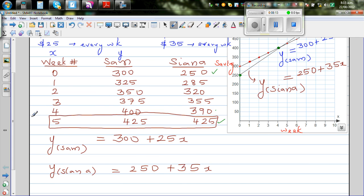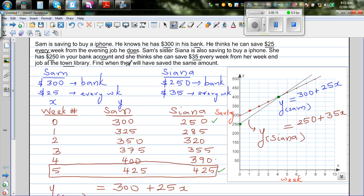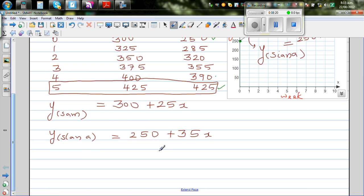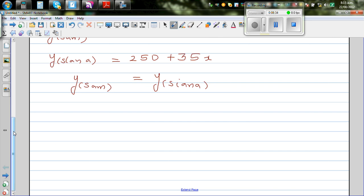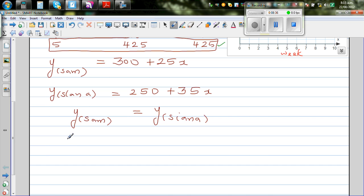The question is when would the savings be the same? When will they have saved the same amount? When is y, the saving for Sam, equal to y, the saving of Sienna? So the equation would be 300 plus 25x is equal to 250 plus 35x.